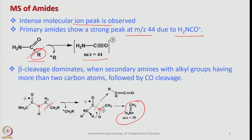The bond breaks — this is called beta cleavage — and then a radical comes out. In the subsequent step, from this radical cation, the CN bond breaks and this species is formed. So this is a typical fragmentation pattern of amides.